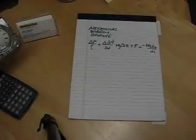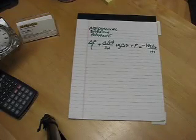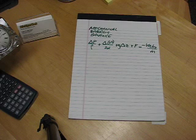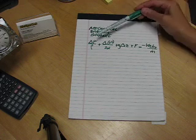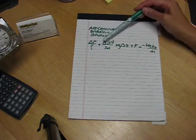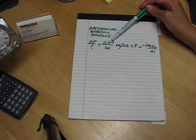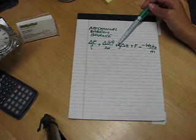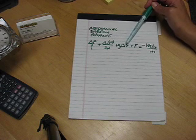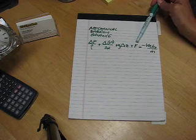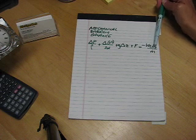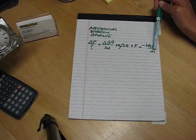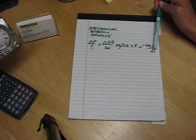I want to give you an introduction to the mechanical energy balance. The mechanical energy balance is written as change in pressure over density plus change in velocity squared over 2 times alpha, plus G times delta Z plus a friction term, is equal to minus the shaft work done by the fluid divided by the mass flow rate.